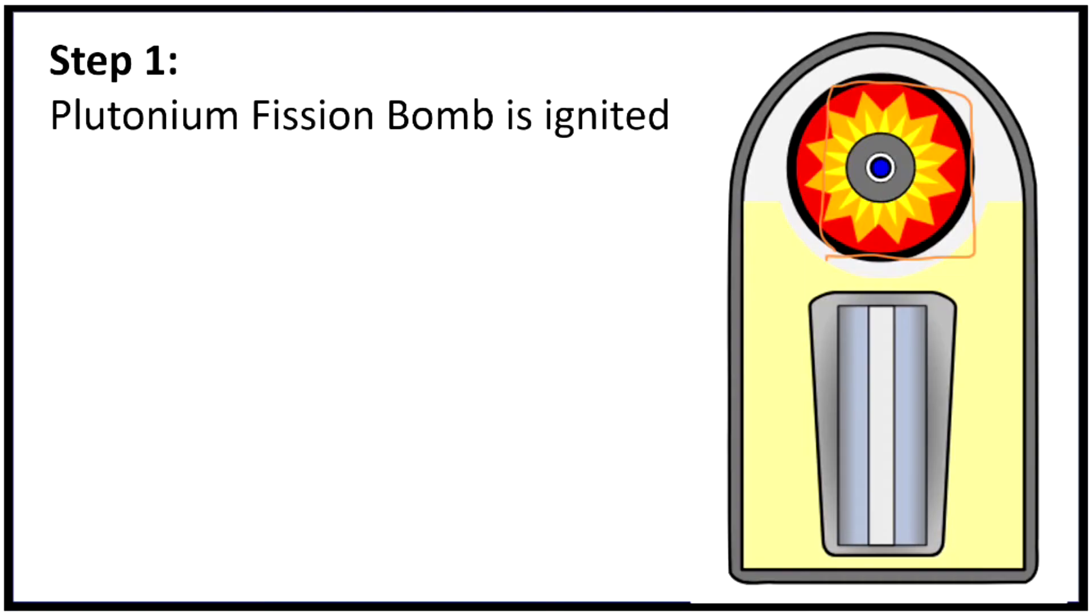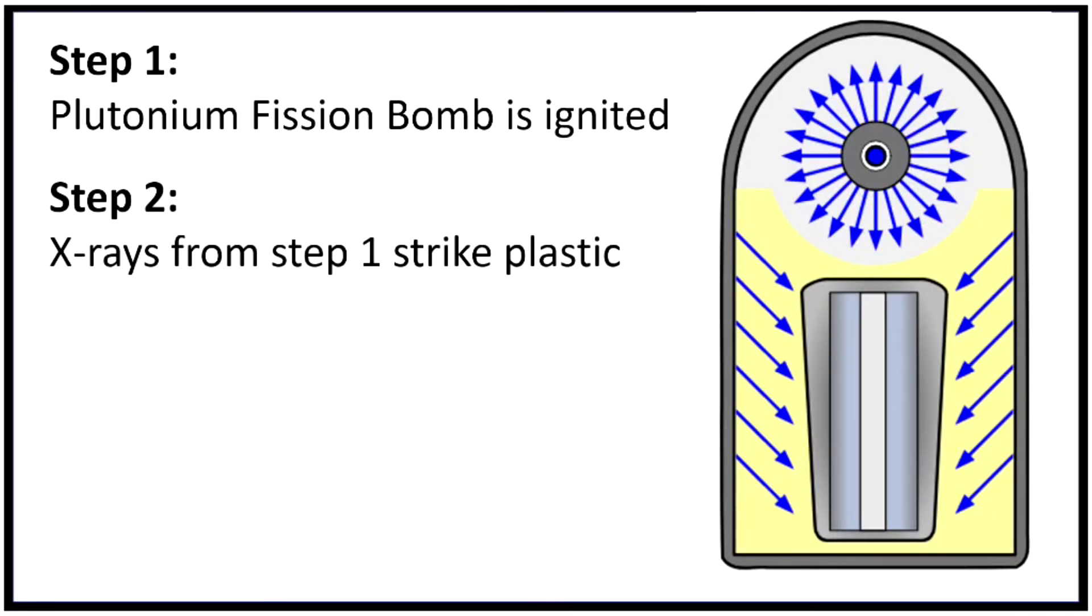And radiation, remember, is just anything that you're radiating in the form of energy could be a light or a particle. In this case, it's x-rays. So step two is actually that x-rays from step one strike the plastic. So a bunch of x-rays come out of our plutonium bomb, and they're reflected off of the casing of the bomb.